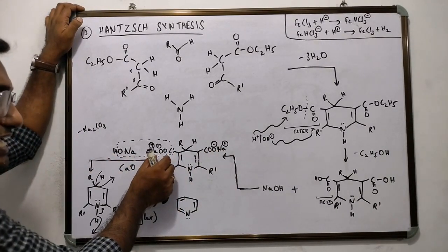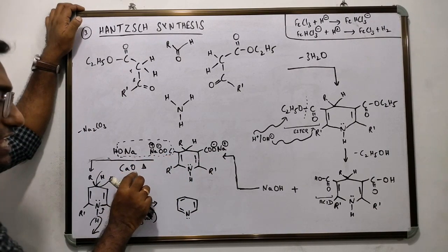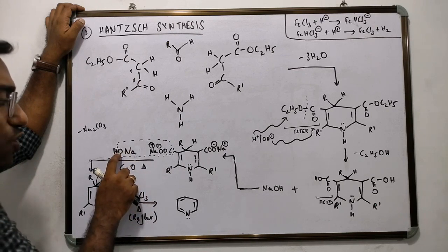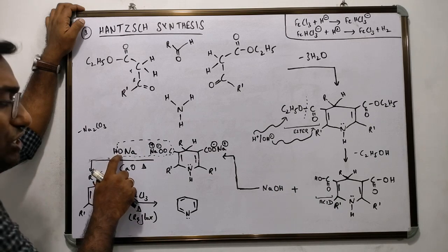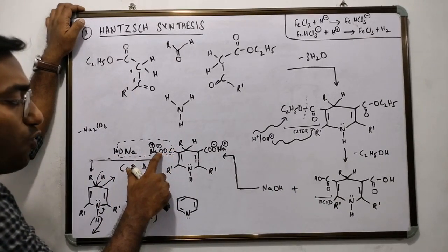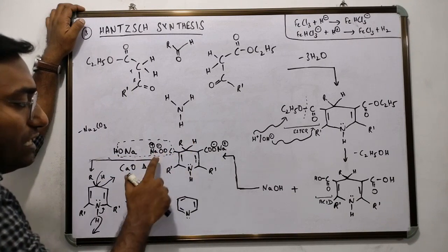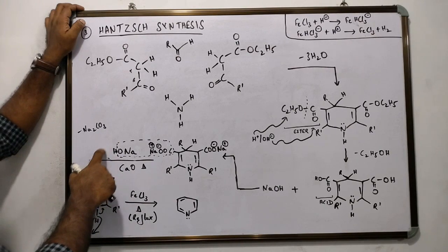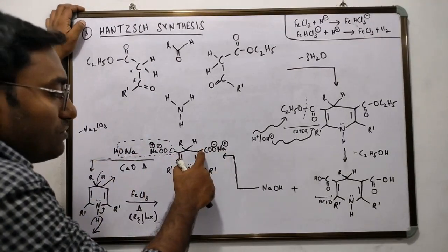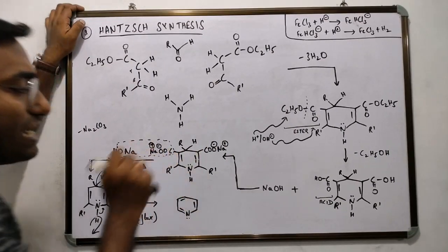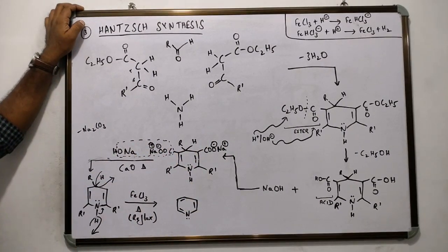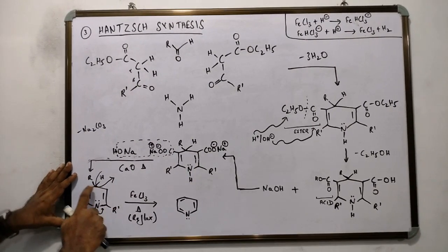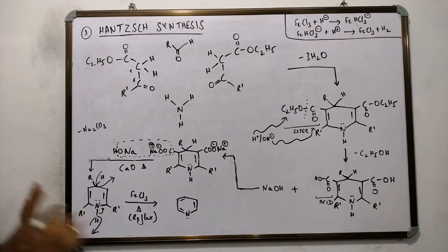Now you can heat it with soda lime, which is CaO plus NaOH. When you heat it with soda lime, the ONa portion from the NaOH goes and attaches to COONa of the moiety to form Na2CO3. The H of this NaOH goes and attaches to the benzene ring on both sides via electrophilic aromatic substitution reaction to form 1,4-dihydro symmetrically substituted pyridine.